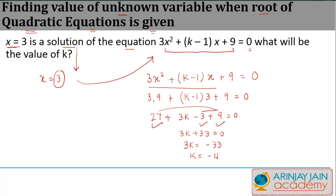Which gives me k = -11. If I put this -11 in this equation, what do I get? I get 3x² + (-11-1), which gives you -12, so -12x + 9 = 0.